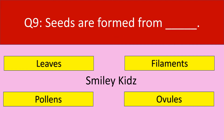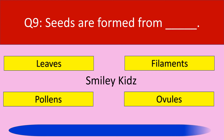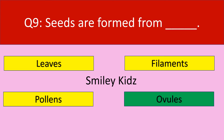Question number 9. Seeds are found from. Options are: leaves, filaments, pollens, ovules. Your time starts now. Your time is up. The correct answer is ovules. Seeds are found from ovules.